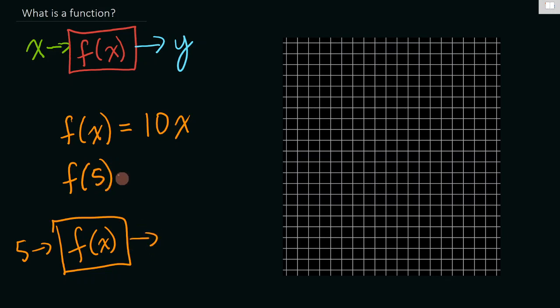Well, in this case f of five is ten times five, and so it spits out 50, saying if you work five hours you get paid 50 bucks.